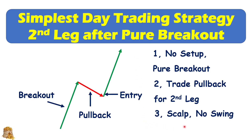Second, we scalp but not swing. That is because the second lag has a higher probability, but the third lag the probability will be very, very low. So you want to scalp.